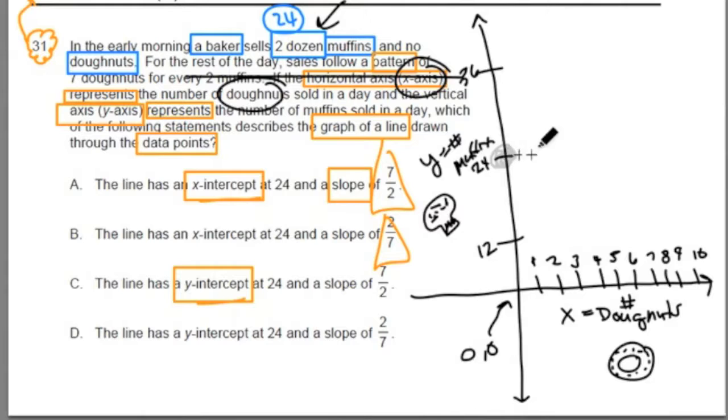our start here, also known as the y-intercept, when x is 0, y is 24.